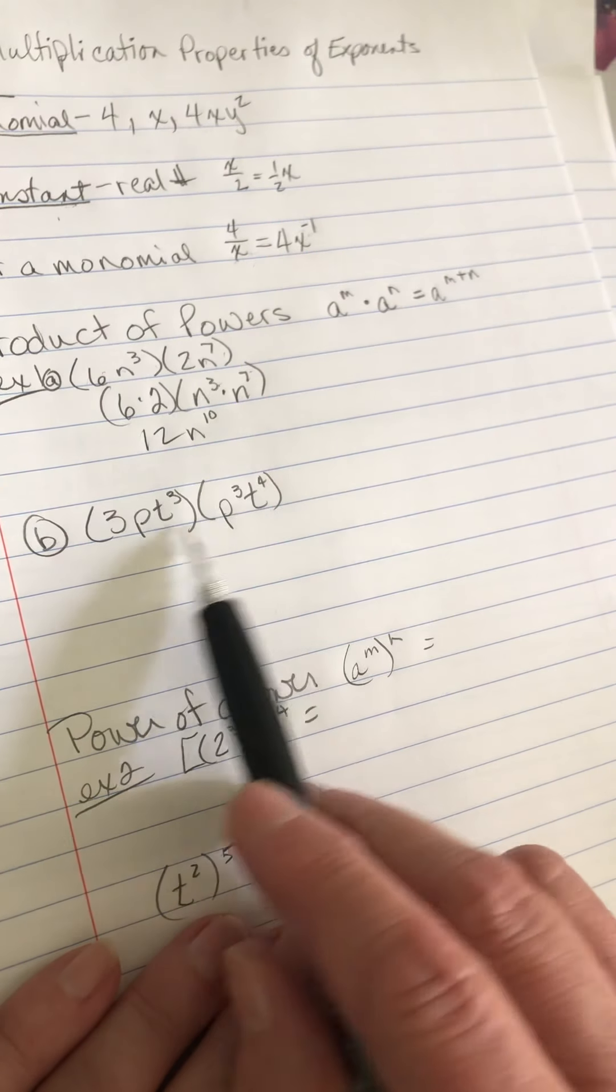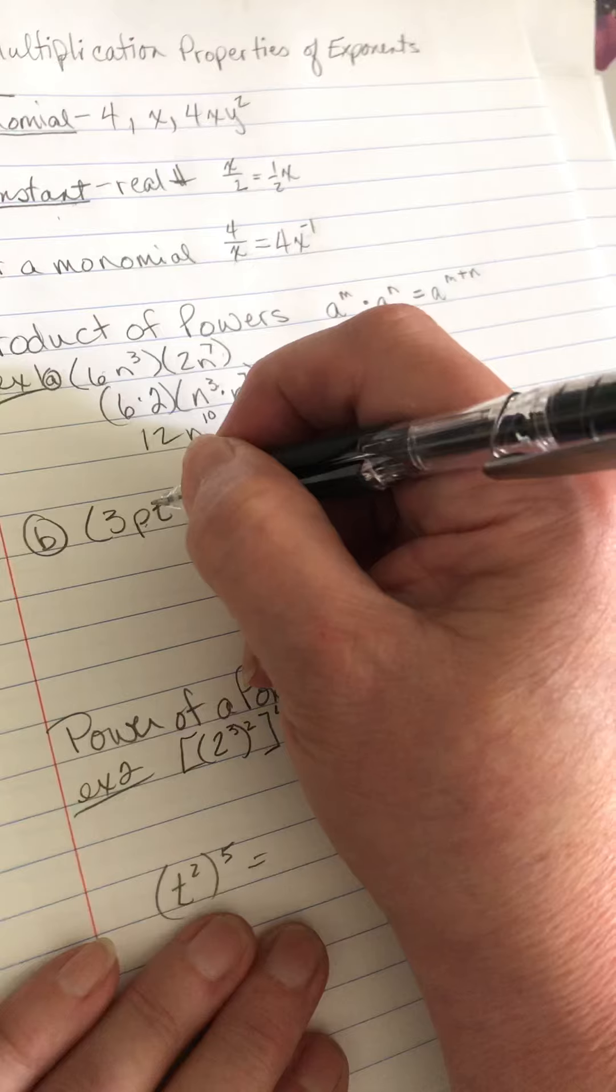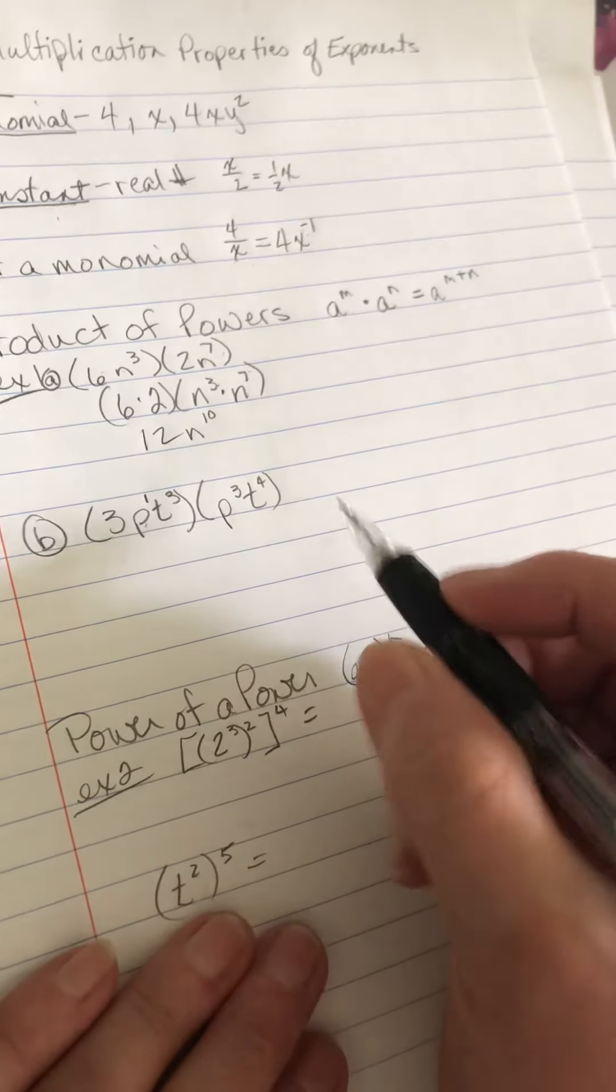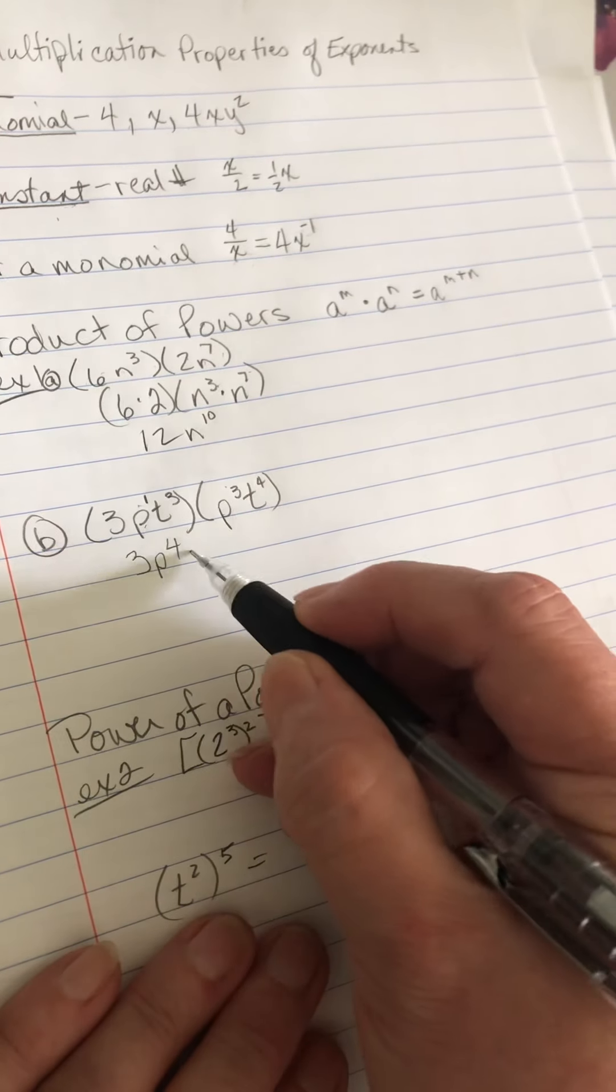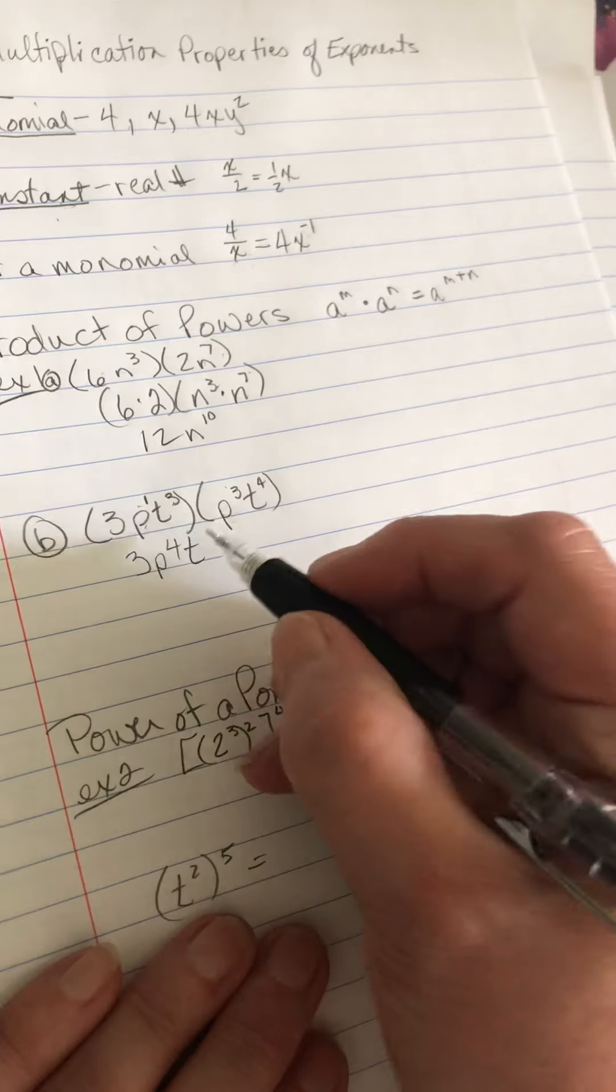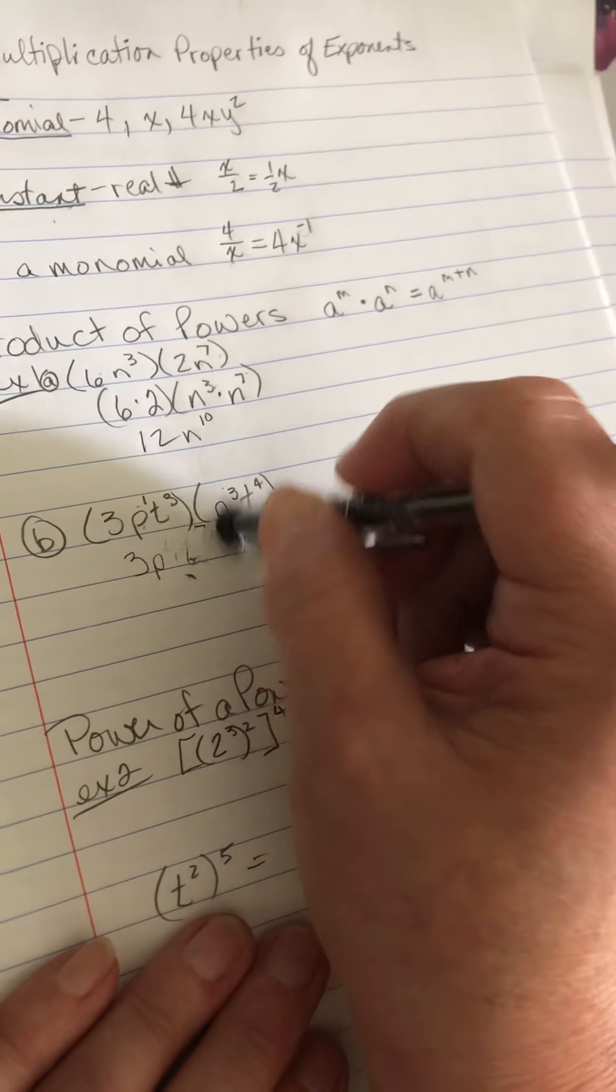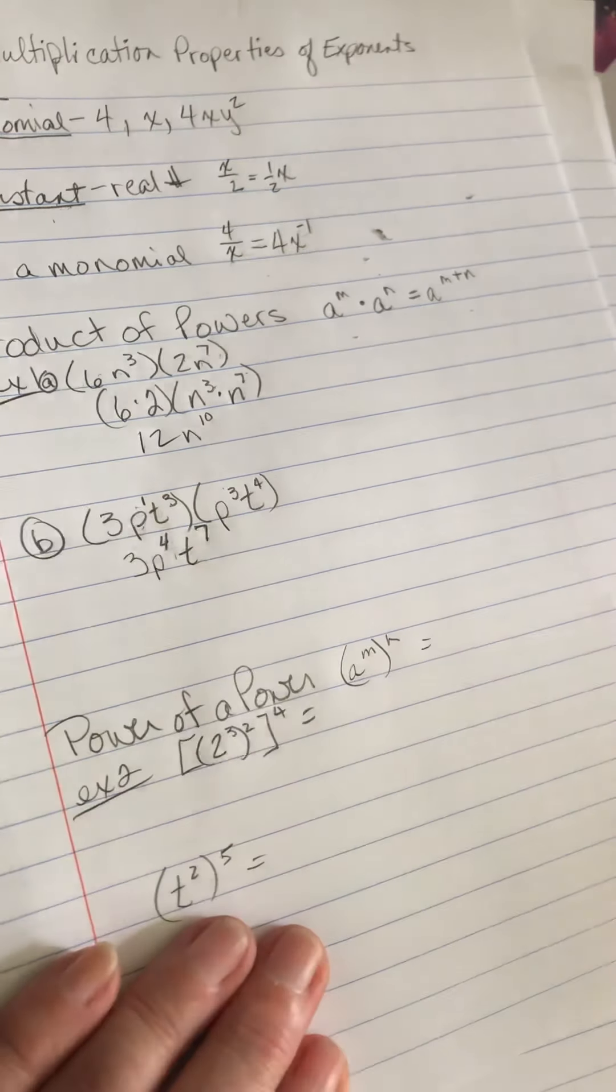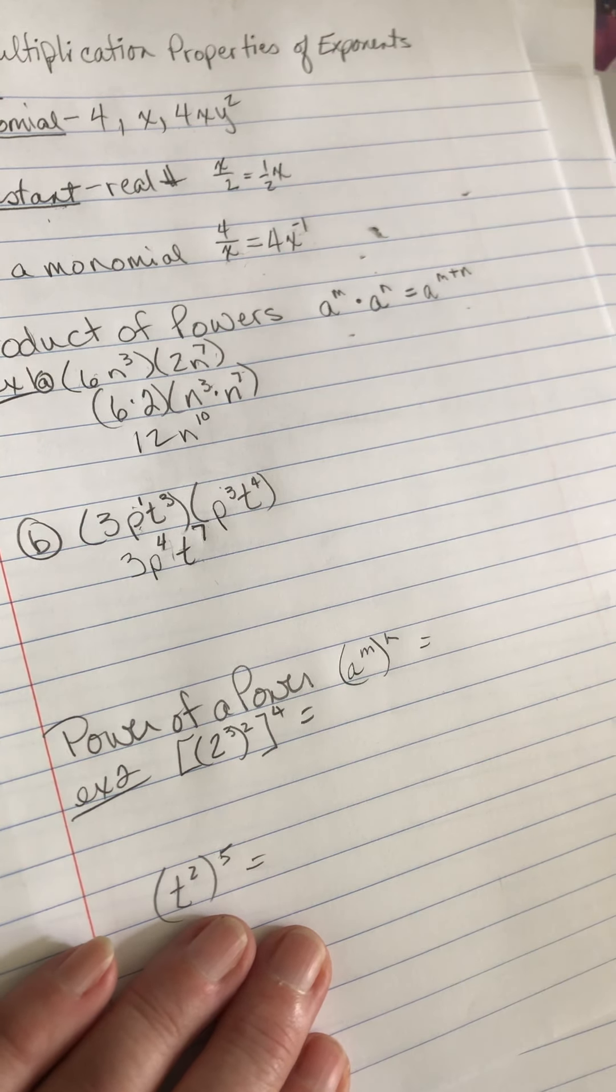When I have this one, notice this P does not have a power. Hopefully you remember that any number without a power is raised to that first power. So this is going to be 3P, 1 plus 3 is P to the 4th, T 3 plus 4 is 7. And I probably should have made those smaller because all your coefficients have to go in front. If you were to see a P with a 4 after it, you would assume that that was an exponent, not a coefficient.